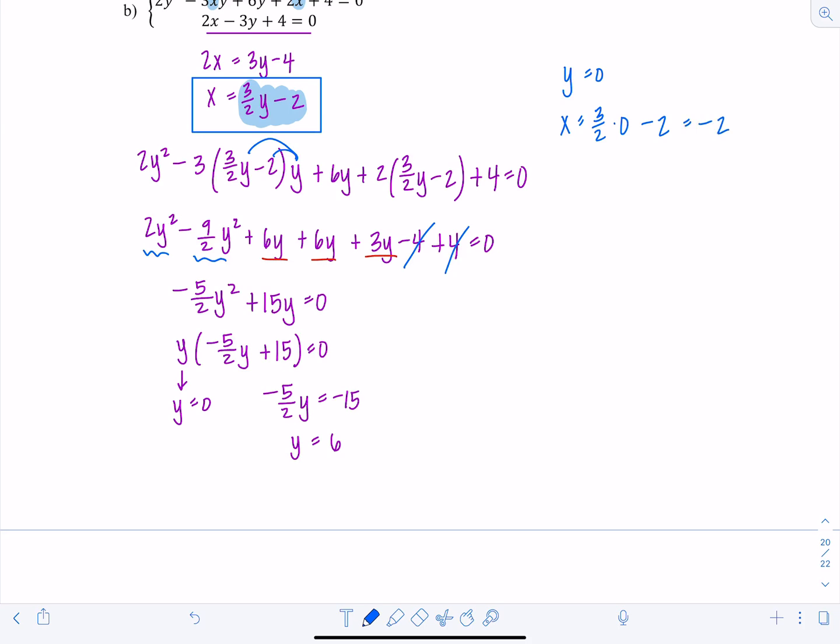And if y is 6, then I get x is 3 halves times 6 minus 2. That's going to be 18 divided by 2, which is 9 minus 2, which is 7.